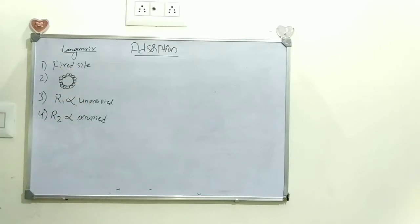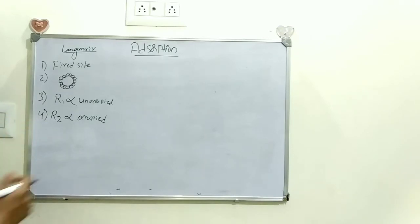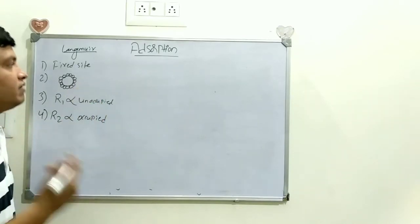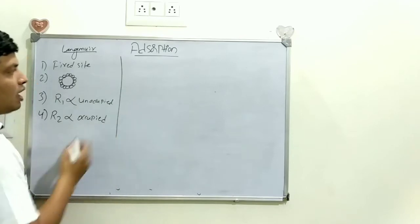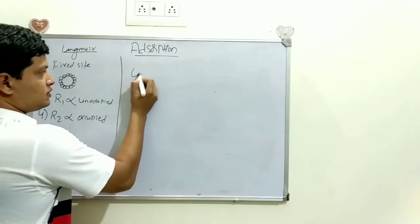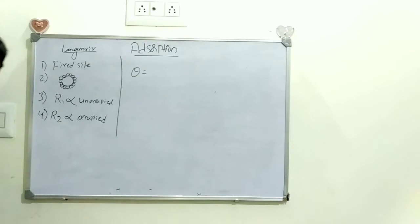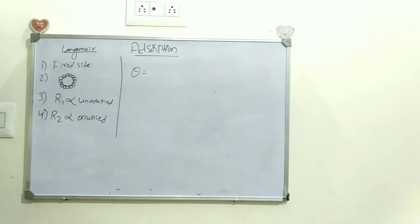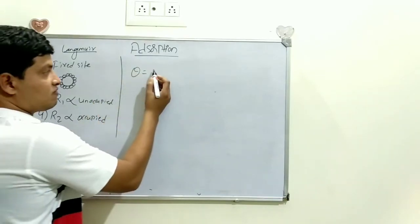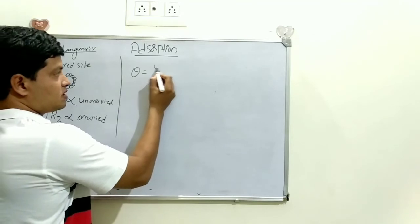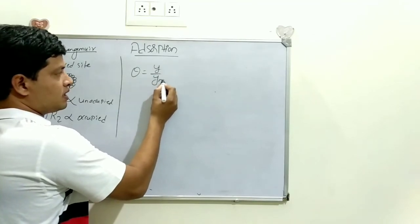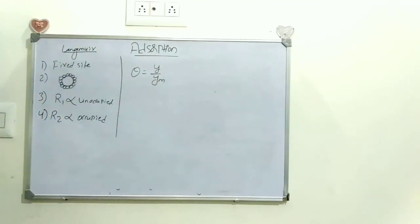These are the four assumptions made by Langmuir. And something we need to know to carry out the derivation: assume that theta (θ) is the fraction of sites adsorbed.